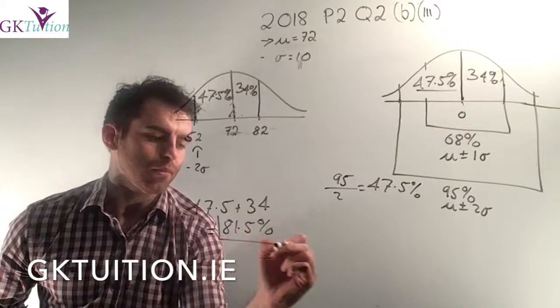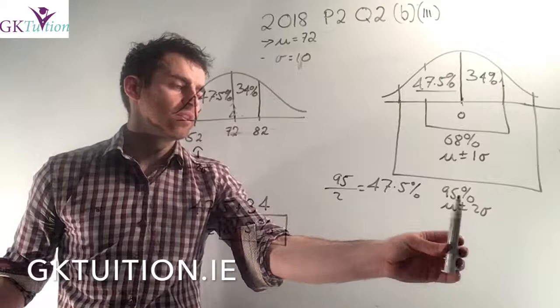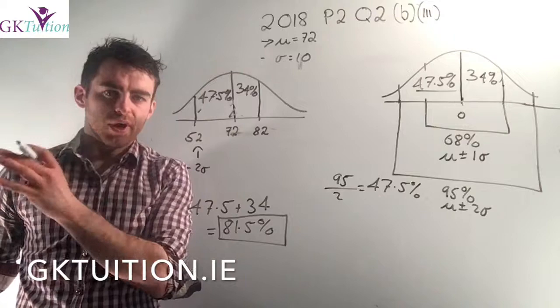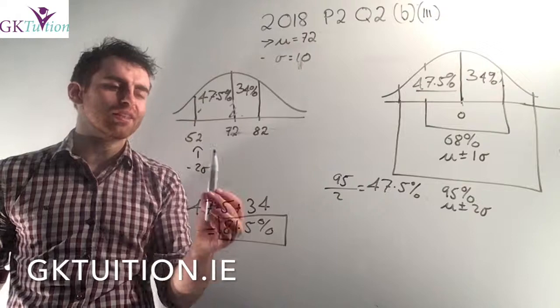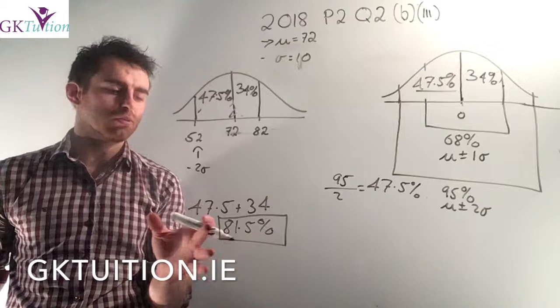Adding those together gives 81.5%. Notice this is an estimate using the empirical rule — from confidence intervals or hypothesis tests you know that actually 95% of data lie within ±1.96 standard deviations, so the empirical rule is an approximation. That's what the 'or otherwise' in the question referred to: if you wanted to be more precise you could convert 82 and 52 to z-scores and read the values from pages 36 and 37 of your log tables, but if the option is given, the empirical rule is far quicker.